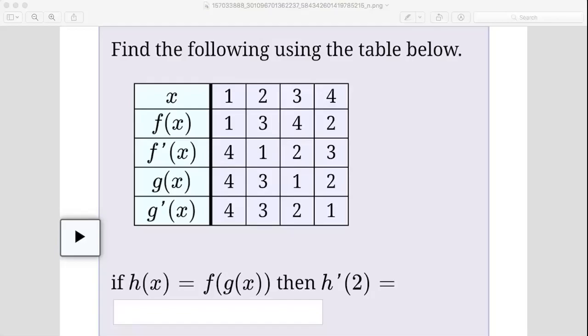Okay so this problem says to find the following using the table below. If h of x is equal to f of g of x, then h prime of 2 is equal to what?